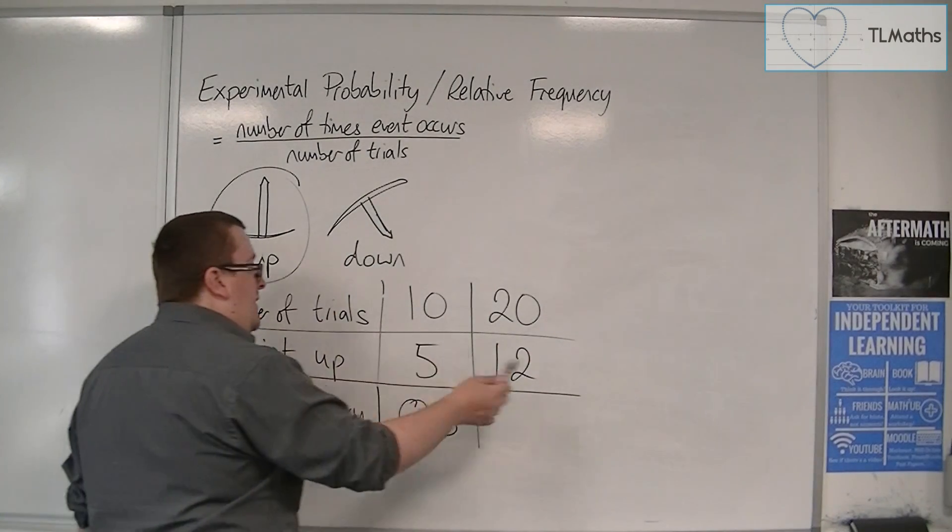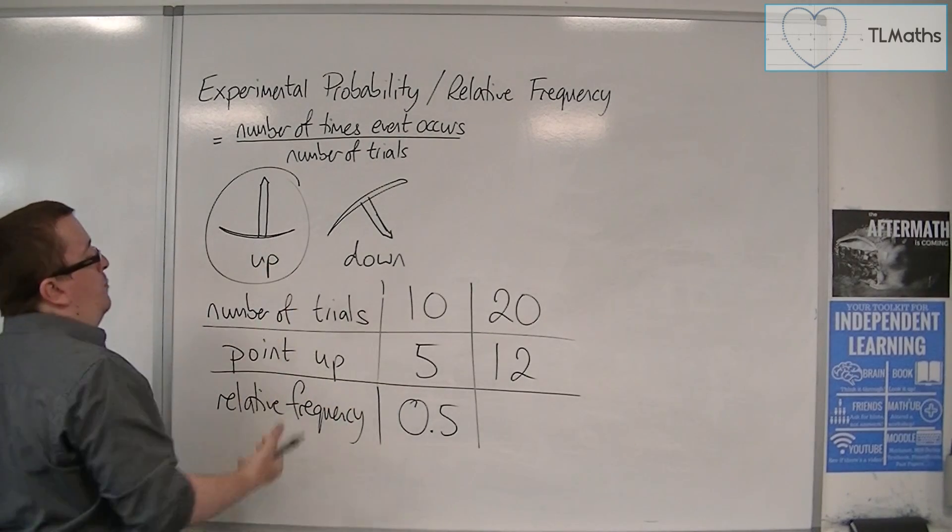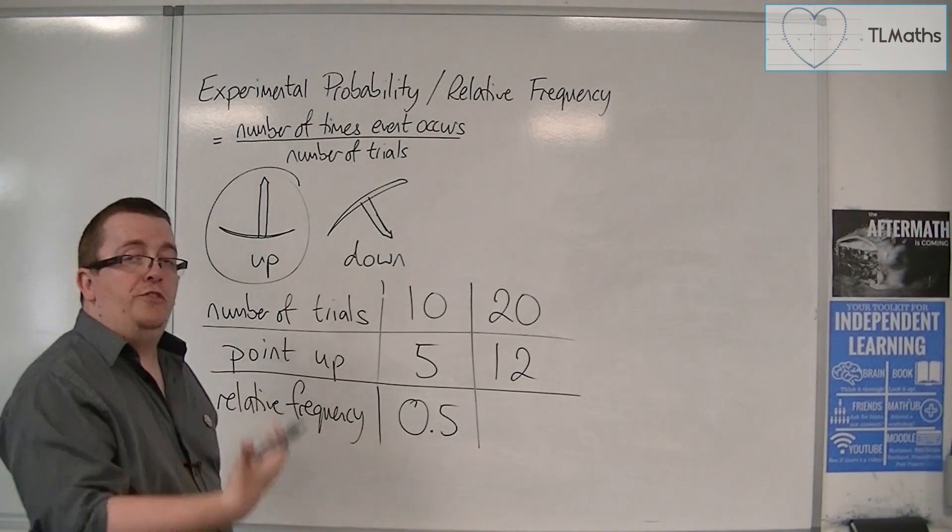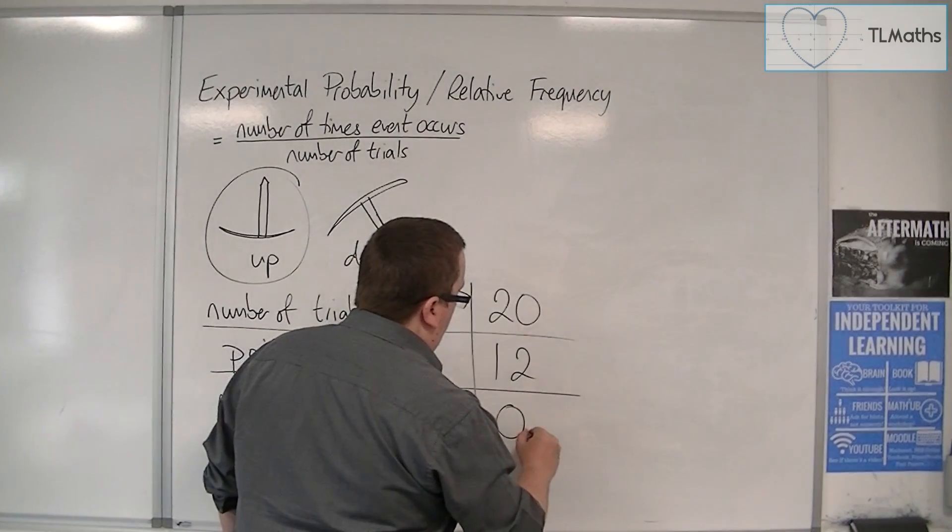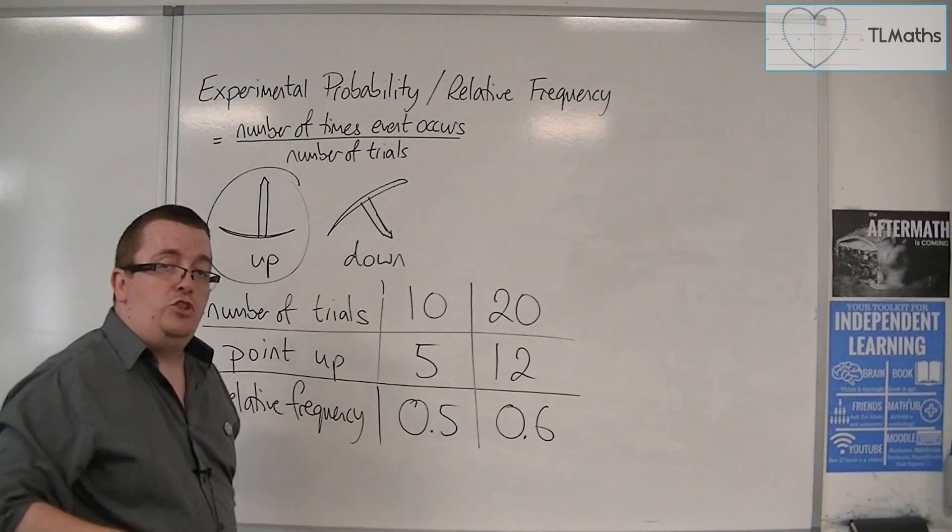So, I've counted that out of the 20 trials, 12 times it's been point up. And so, 12 divided by 20 is 0.6. So, you can see that the relative frequency is changing.